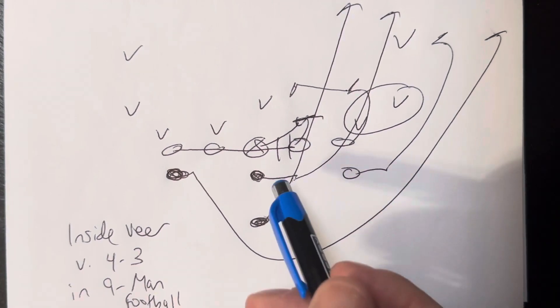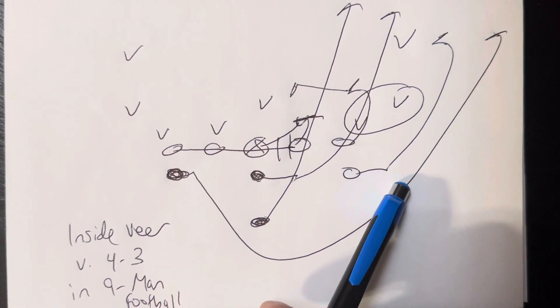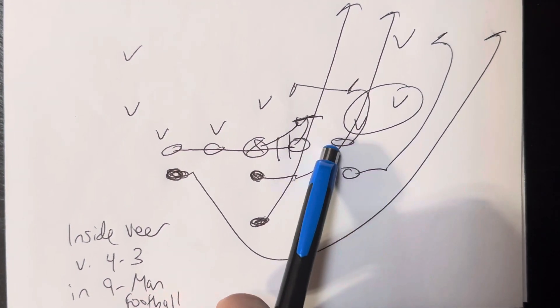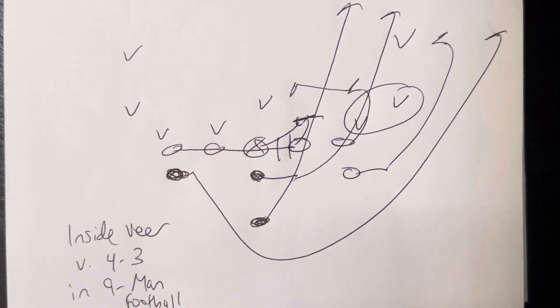As soon as he turns up, he's got to get his eyes on the quarterback, and he's going to get ready for that ball to get pitched. But he wants to be there where the ball gets pitched if the quarterback pitches from there. So you want the pitch to be parallel. You want the flick to be parallel. So that's inside veer versus a 4-3 in nine-man football.